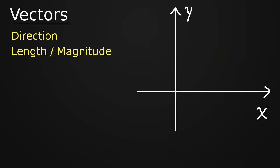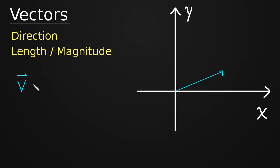Now let's look at a specific example. Here is a vector, and I want to first of all name that vector. So I'm just going to call it V, and I'm going to put a little arrow over the top of it to make sure that we know that this is a vector. So the vector V — now I want to capture this information. I want to capture what that arrow is telling us without needing to draw it. I can't just say V is equal to this arrow; that's too ambiguous. I need something more definite, something with more structure.